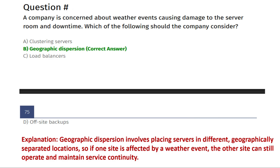The correct answer is Option B: geographic dispersion. Geographic dispersion involves placing servers in different geographically separated locations. If one site is affected by a weather event, the other site can still operate and maintain service continuity.